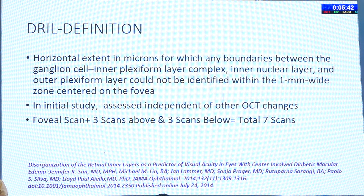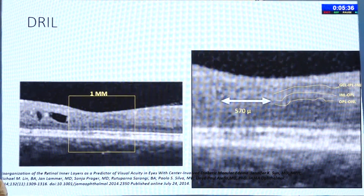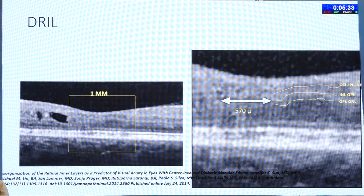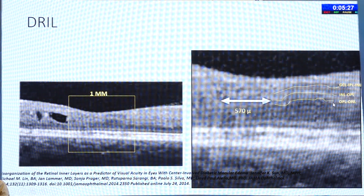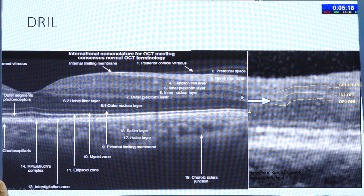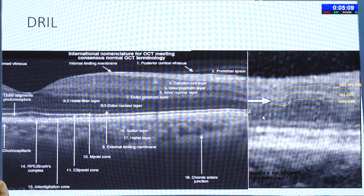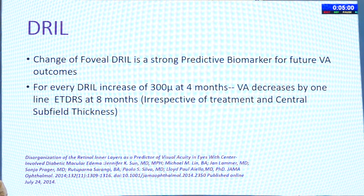In initial studies, three scans above and three scans below the fovea — seven total — were taken. Here you can see photographs of the one-millimeter area measured, with a 570-micron DRIL extent shown. The OPL and ONL layers are visible, and this is compared with a normal OCT of the macula to identify which layers are involved.